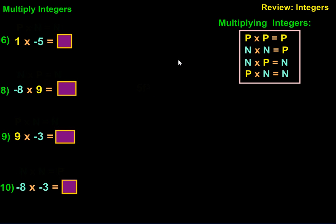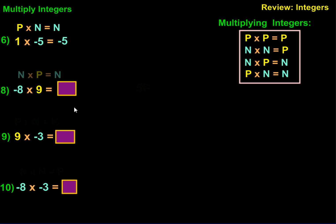Let's try these out. We have 1 times negative 5. The rule that applies here is a positive times a negative equals a negative. So 1 times 5 is 5, and it has to be negative 5. For number 8, we have negative 8 times 9. The rule is negative times positive, which should get us a negative. So 8 times 9 is 72, and our answer has to be negative — so it's negative 72.